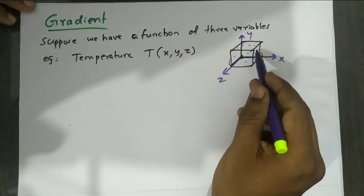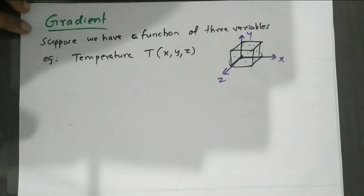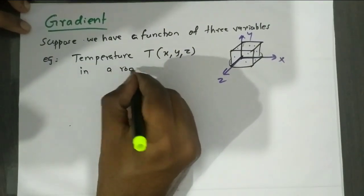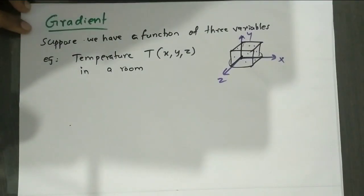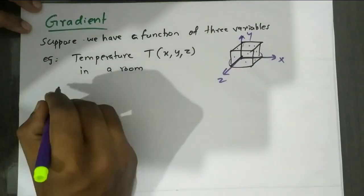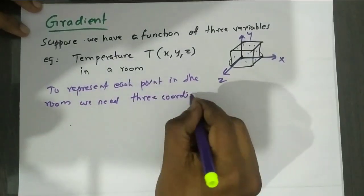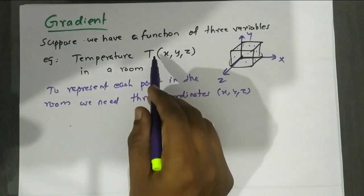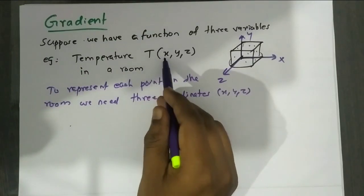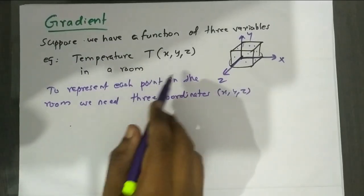To represent each point in the room, we need three coordinates: x, y, z. In the earlier case our function was dependent only on one variable, but here the function depends on three variables. That is, here the situation is a bit more complicated.